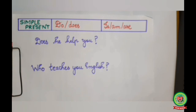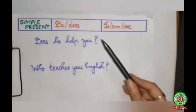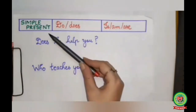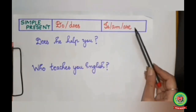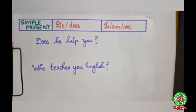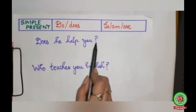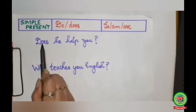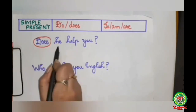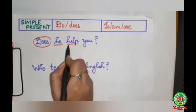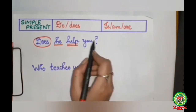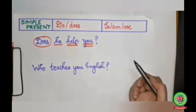Now we will discuss how to change interrogative sentences into passive voice. If a sentence is given in the simple present tense, we have to add the helping verbs 'is', 'am', or 'are'. We will understand with the help of examples. In the first example: 'Does he help you?' Here 'does' is the question word. 'He' is the subject — single underline. 'Help' is the action word — double underline. 'You' is the object — triple underline.